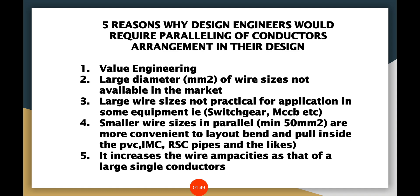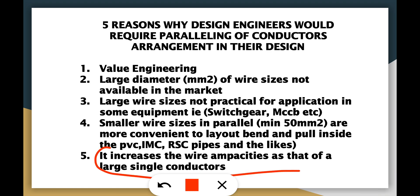Smaller wire sizes are more convenient to pull inside PVC, IMC, or RC pipes or conduits compared to bigger sizes of single conductors. The fifth reason is that it increases the wire ampacity of the parallel conductors — the wire sizes have the ampacity equivalent to that of the large single conductors. I will prove this to you in the succeeding discussion.